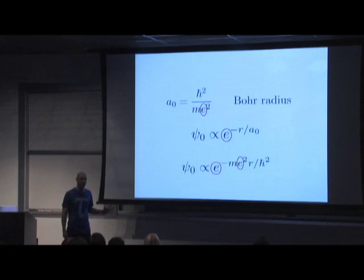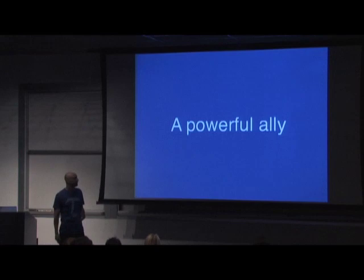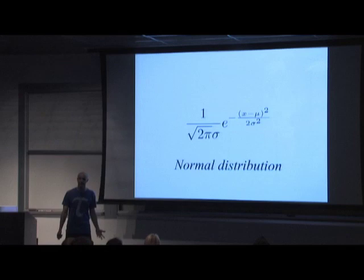But this is all I'm going to say about the notation tau — the rest of the talk is about the number. We have a powerful enemy in pi, but we have a powerful ally: we have the truth on our side. Let me take a quick tour through some equations to show you the patterns that show up.